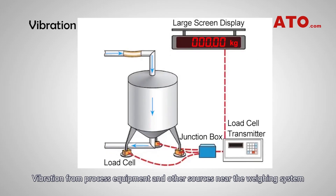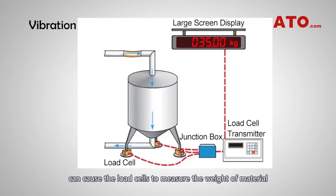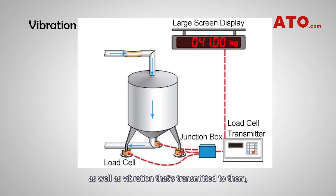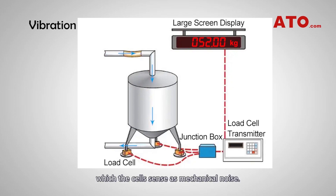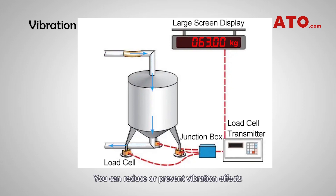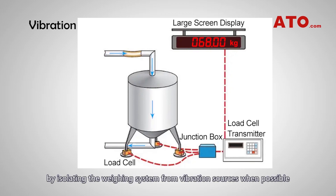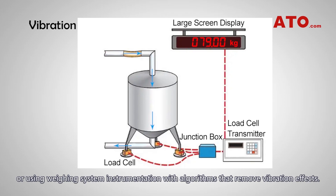Vibration from process equipment and other sources near the weighing system can cause the load cells to measure the weight of material as well as vibration transmitted to them, which the cells sense as mechanical noise. You can reduce or prevent vibration effects by isolating the weighing system from vibration sources when possible, or by using weighing system instrumentation with algorithms that remove vibration effects.